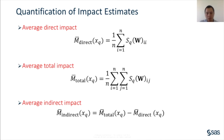We need summary measures of direct, indirect, and total impacts to quantify the varying impacts of changes in an explanatory variable. The average direct impact measures the impact of changes in x_q in a given region on the dependent variable Y in the same region. The average total impact is calculated as an average of the row sums of the matrix (I - rho*W)^{-1}*(beta_q*I + gamma_q*W). The average indirect impact of x_q is the difference between the average total impact and the average direct impact, measuring the impact on Y in a given region arising from changes in x_q in all other regions.